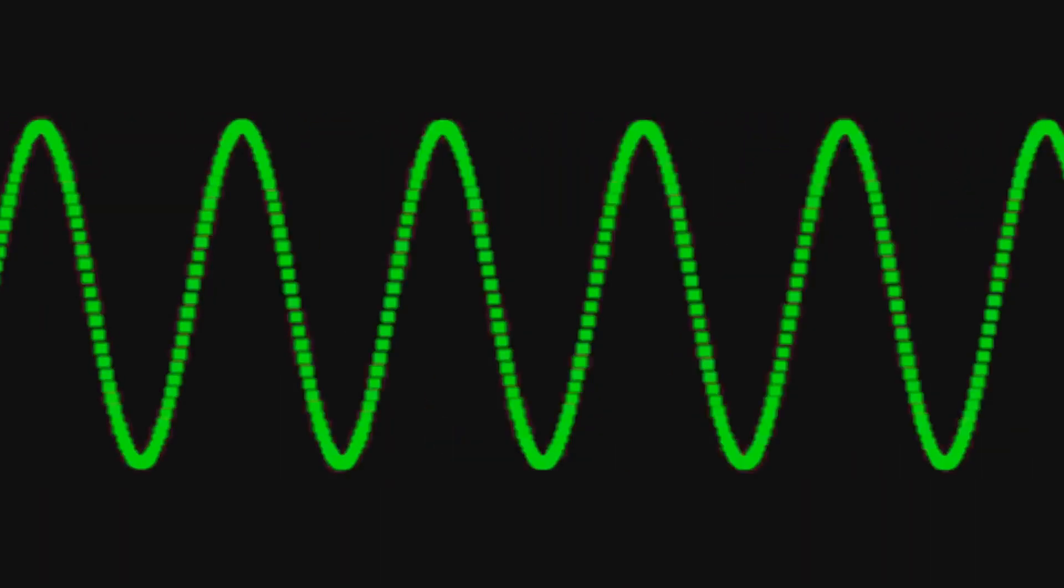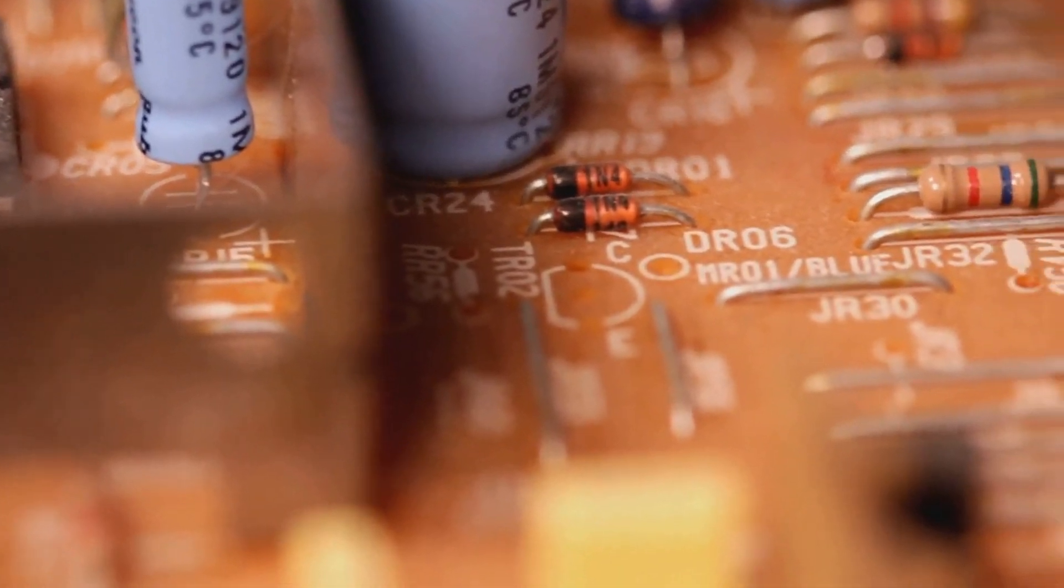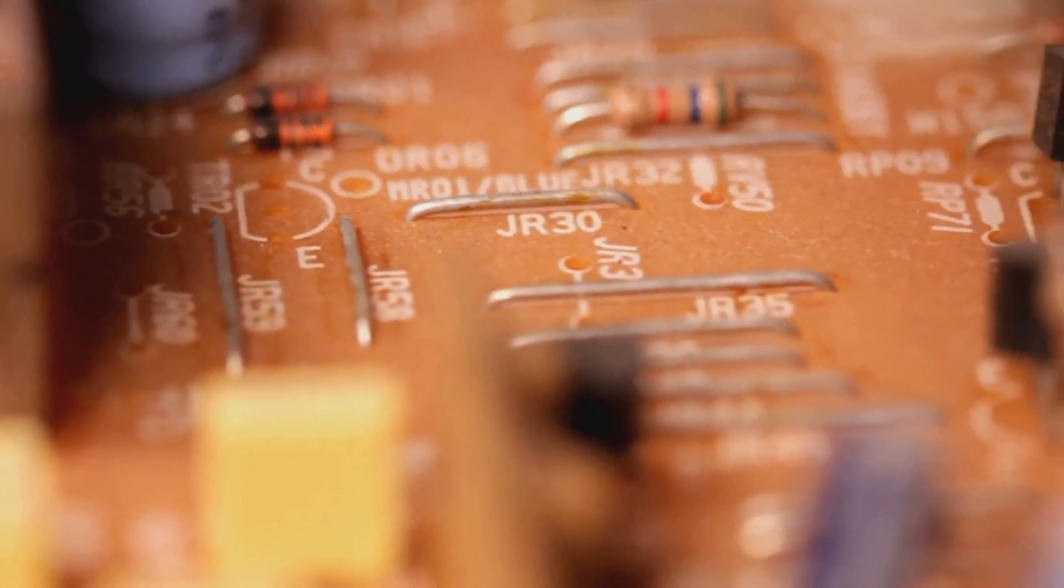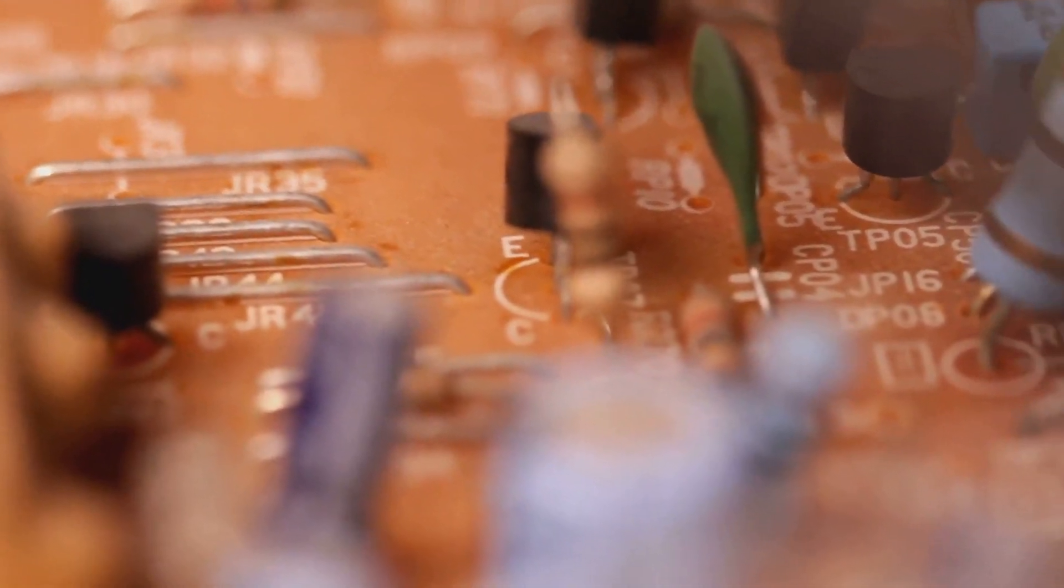This results in a pulsating direct current output waveform. To smooth out this pulsating direct current and make it more suitable for electronic devices, capacitors are used in conjunction with rectifier diodes.